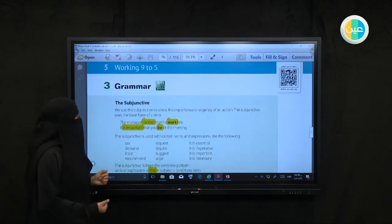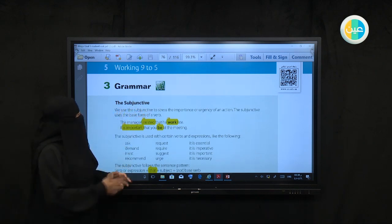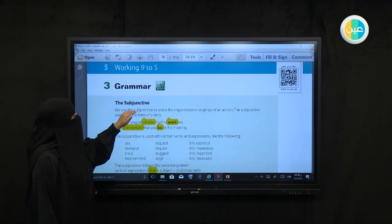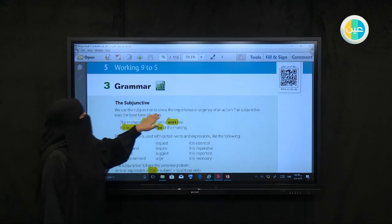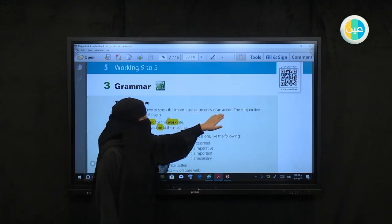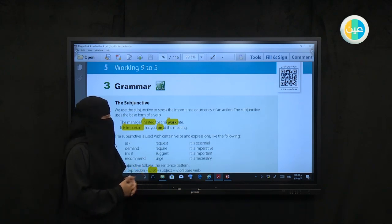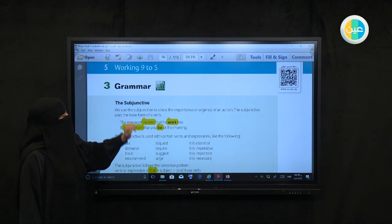Let's try to enter the grammar. Today we have a subject called the Subjunctive. The Subjunctive here is something that it is a verb. It is a form of the verb. We will use this verb to stress the importance or the urgency of an action. We will explain the importance of the verb that the person does. The Subjunctive uses the base form of the verb.